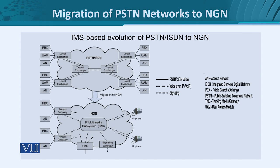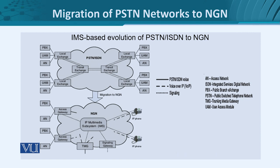On the left-hand side, legacy terminal equipment accesses IMS for NGN services through the access gateways. On the right-hand side, fully IP-enabled equipment such as IP phones or IP TV can directly communicate and exchange signaling information with IMS. This IP Multimedia Subsystem migration supports the legacy networks so that sooner or later all components are completely replaced by NGN-compatible hardware.